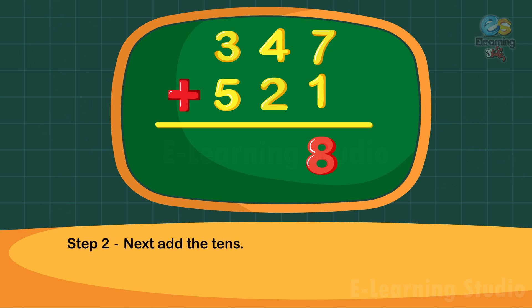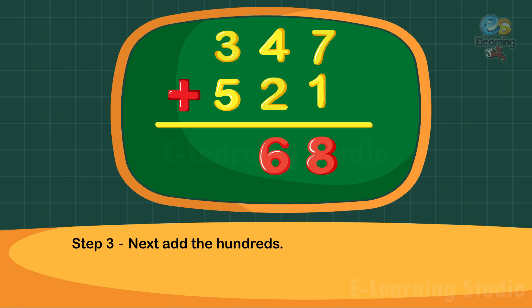Next add the tens. 4 plus 2 is equal to 6. 6 under tens column. Step 3: Next add the hundreds. 3 plus 5 is equal to 8. 8 under hundreds column. Thus the sum is 868.